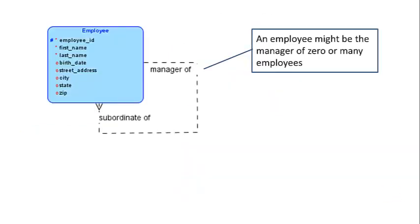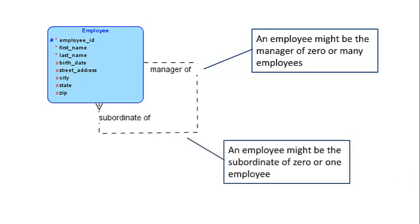So look at the relationship again, and I'm just showing you explicitly how we read the relationship. An employee might be the manager of zero or many employees, and an employee might be the subordinate of zero or one employee. So we are just reading the relationship like we have done earlier.